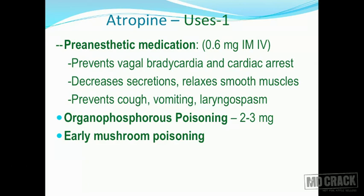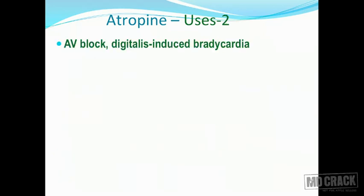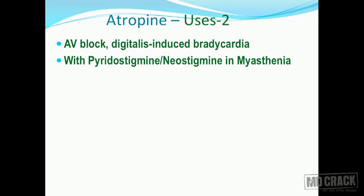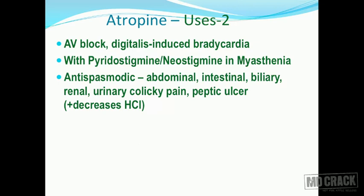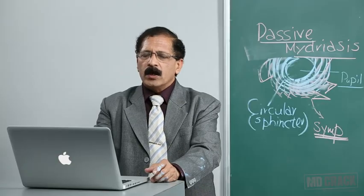Atropine can also treat early mushroom poisoning and overdoses by various anticholinesterase agents — not only organophosphorus compounds but also physostigmine. Since physostigmine crosses the blood-brain barrier and atropine also crosses the blood-brain barrier, atropine can manage physostigmine overdose and vice versa. Atropine is used for AV block and digitalis-induced bradycardia. It can be combined with pyridostigmine or neostigmine in myasthenia gravis to block their muscarinic side effects. It is an important antispasmodic for colicky pain and peptic ulcer pain, and is used for mydriasis, cycloplegia, and in parkinsonism to block excess acetylcholine.